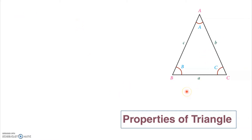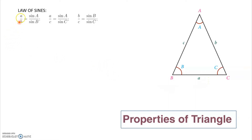Consider a triangle ABC with angles A, B, and C. The length of the side opposite to vertex A is small a, opposite to B is small b, and opposite to C is small c. For this triangle, a by b equals sine A by sine B, a by c equals sine A by sine C, and b by c equals sine B by sine C. This is called the law of sines.